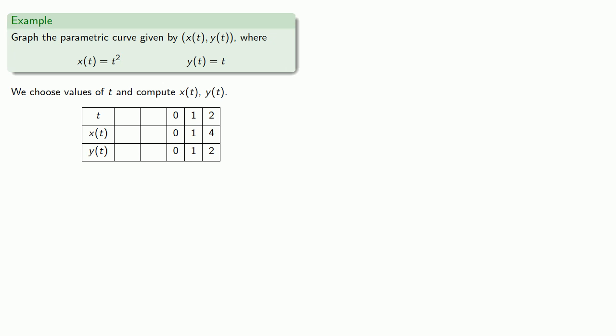And we can plot these points. Now, when you graphed curves, you also chose negative values of x. So let's pick some negative values of t. If t = -1, we get... If t = -2...